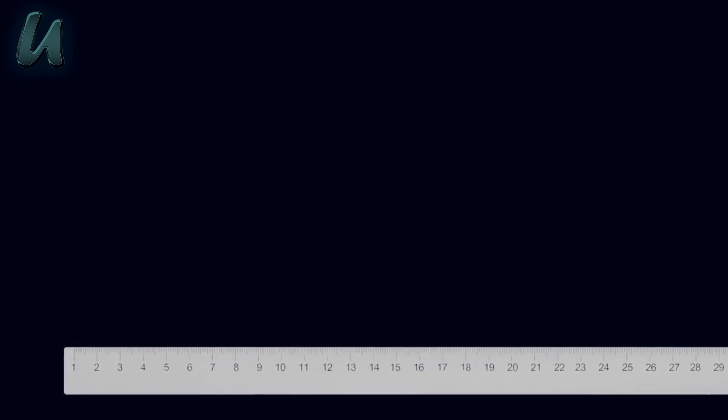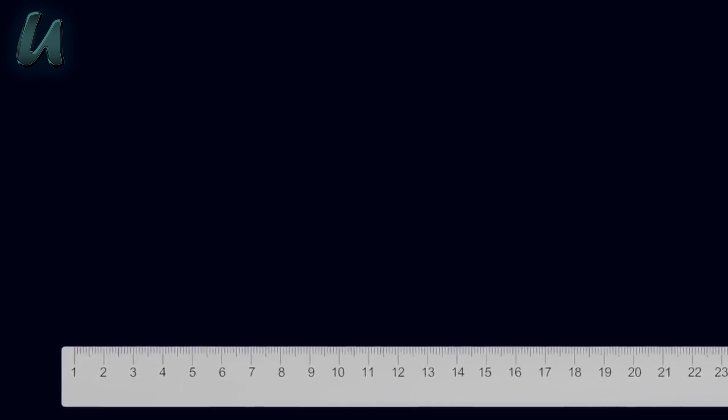So how would it be to imagine the Planck length? It is just mind meltingly small. Here we have a 30cm ruler. Here we can see 1mm. The human eye cell is 0.1mm in diameter. Coincidentally, this is about the smallest thing that can be seen with the naked eye.